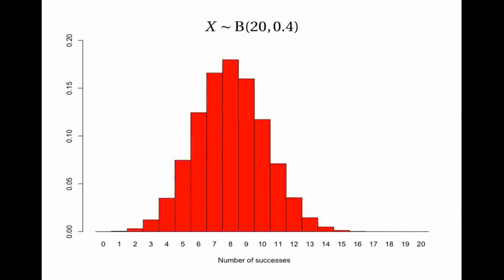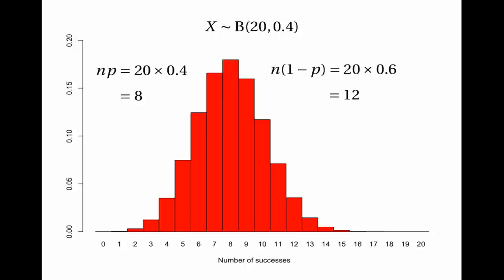Here's another example: 20 trials and p=0.4. Here np is 20 times 0.4 which is 8, and n(1-p) is 20 times 0.6 which is 12. Both are greater than 5, and superimposing the normal distribution shows no problems. So this is another valid case for using the normal approximation.